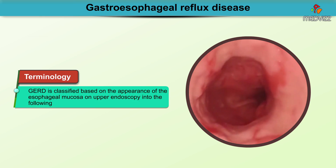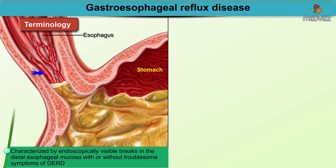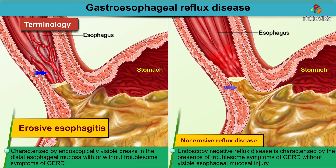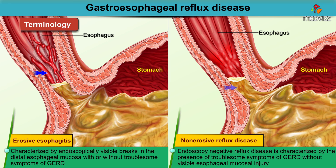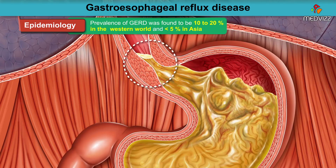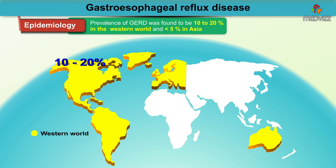GERD is classified based on the appearance of the esophageal mucosa on upper endoscopy into erosive esophagitis and non-erosive reflux disease. Erosive esophagitis is characterized endoscopically as visible breaks in the distal esophageal mucosa with or without troublesome symptoms. Non-erosive reflux disease, or endoscopy-negative reflux disease, is characterized by troublesome symptoms of GERD without visible esophageal mucosal injury. The prevalence of GERD is about 10 to 20% in the Western world and less than 5% in Asia.